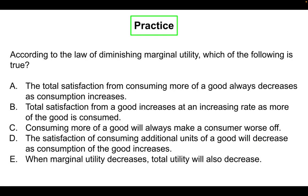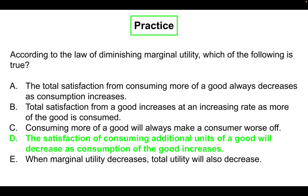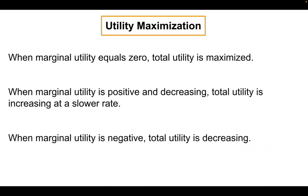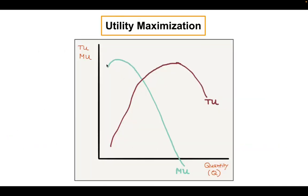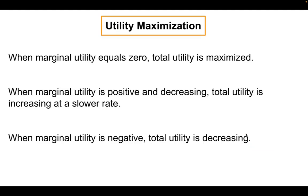Here's a multiple choice practice question: according to the law of diminishing marginal utility, which of the following is true? The correct answer is D — the satisfaction of consuming additional units, that's marginal utility, will decrease as consumption of the good increases. Note this doesn't have to happen immediately — looking back at the graph, marginal utility can actually go up a little bit at first before it comes down.